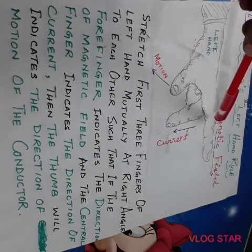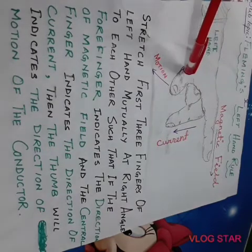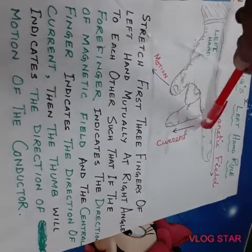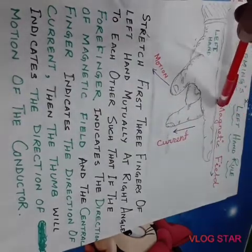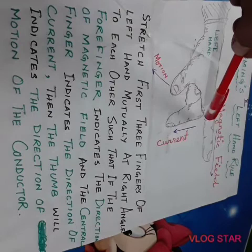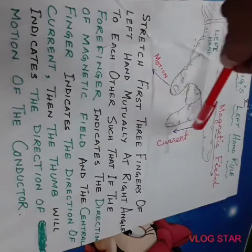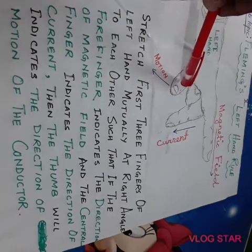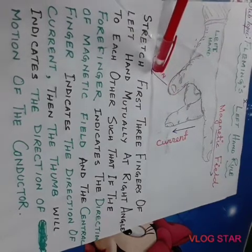Here, the forefinger, middle or central finger, and thumb are placed mutually at 90 degrees to each other. The forefinger expresses the direction of magnetic field, the middle finger expresses the direction of current, and the thumb shows the direction of motion of the conductor.